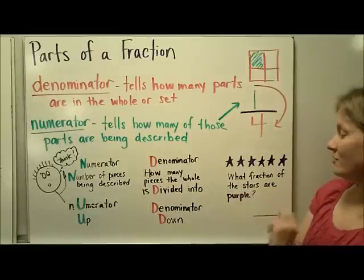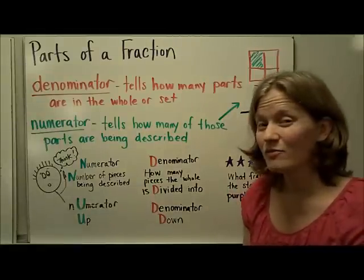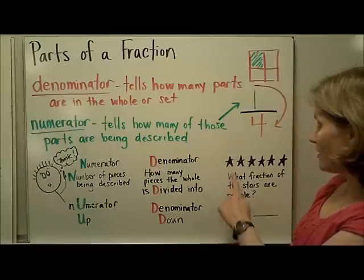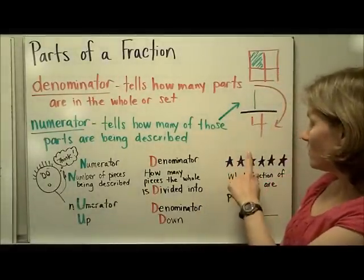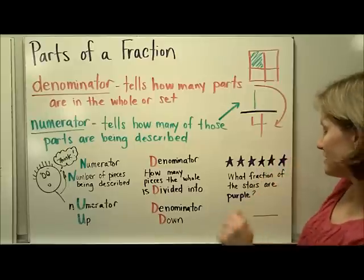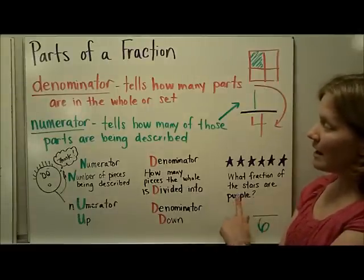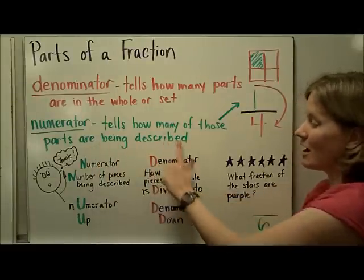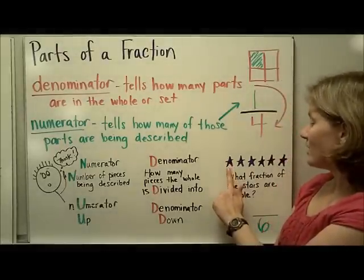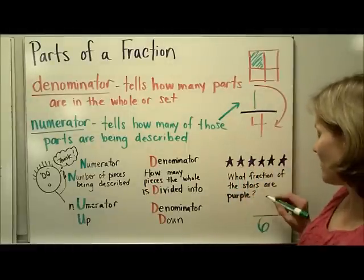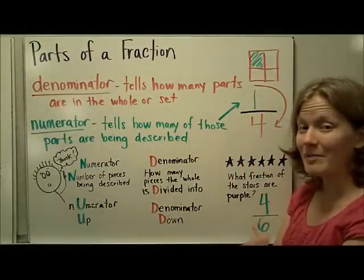So, for example, in this problem, if you see what fraction of the stars are purple, it would always be helpful first to think about the denominator. So you want to think about how many pieces that set is broken into. One, two, three, four, five, six. There are six stars, so this is the denominator, and then I want to look at how many of the parts are being described. I'm looking specifically for purple stars, so I'm going to count one, two, three, four, and that becomes my numerator. My numerator is four, and my denominator is six.